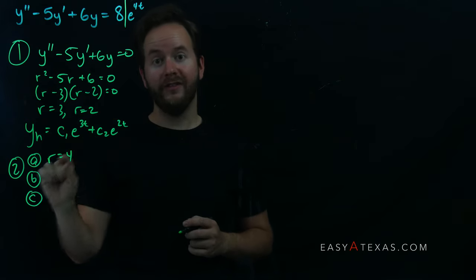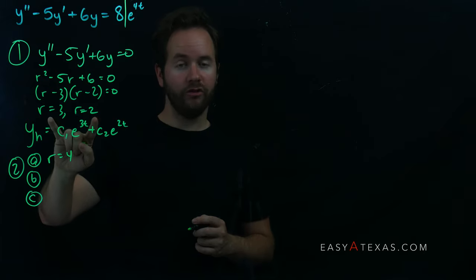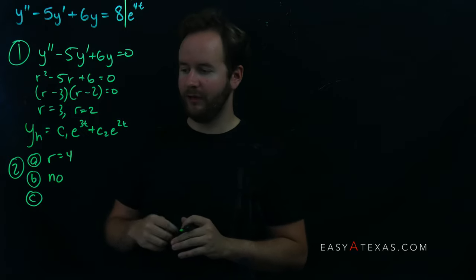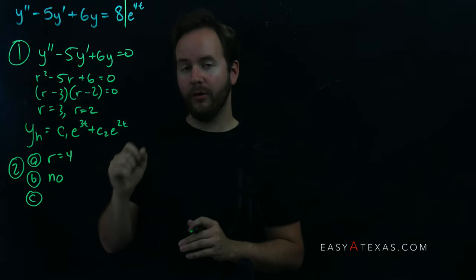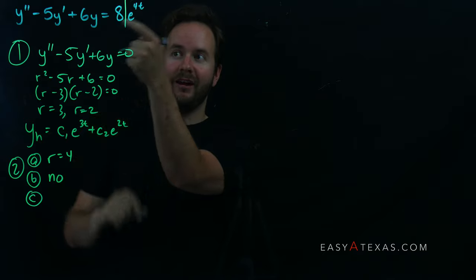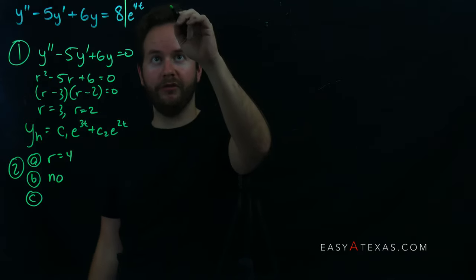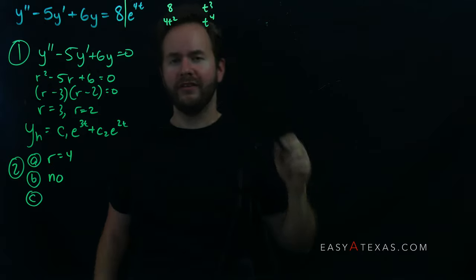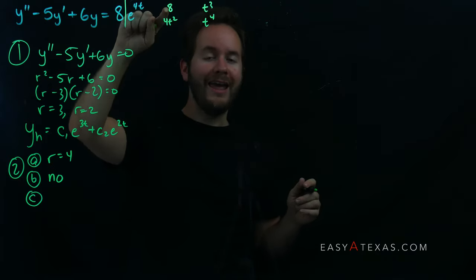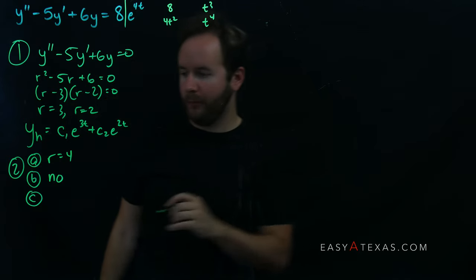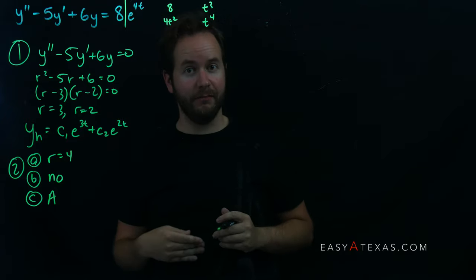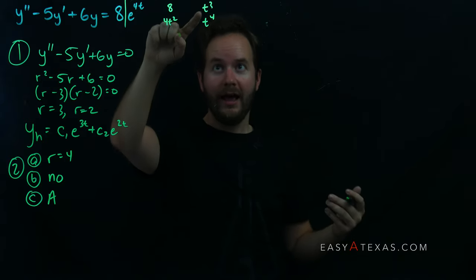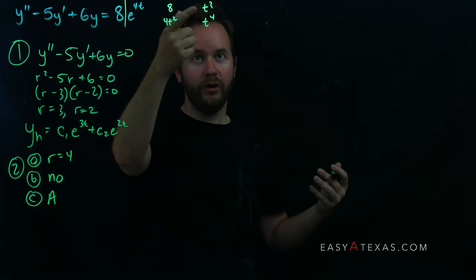Part b: does r equals 4 match one of the values of r we found earlier? No, it doesn't. Part c: what degree polynomial do we see on the left side of this line? The number 8 is a degree-0 polynomial, so a general degree-0 polynomial is just 'a'. By contrast, a degree-1 polynomial would be at + b, degree-2 would be at² + bt + c, and so on.